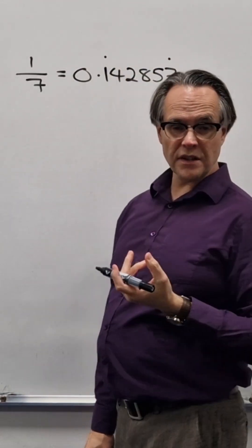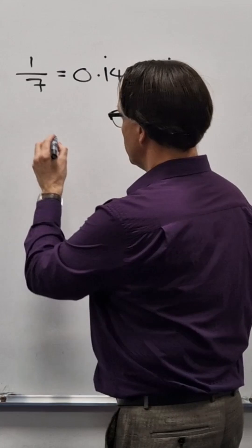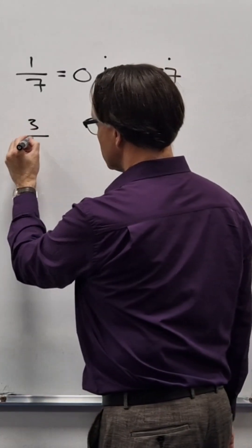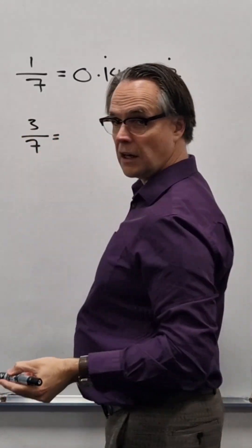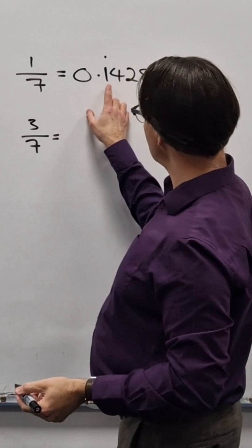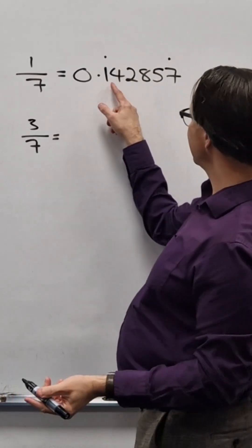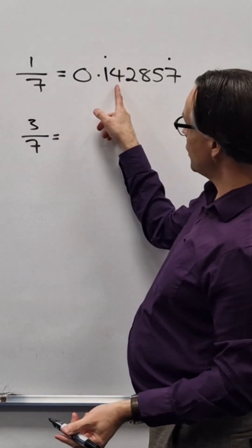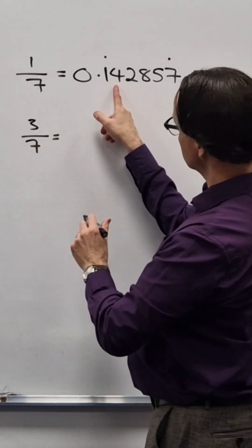If you want to write a different number of sevenths as a decimal, let's say you want to write three sevenths, it's a really nice way to do it. If I start, that's the lowest number, that's the second lowest number, that's the third lowest number because it's three sevenths.